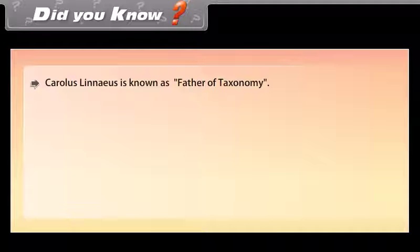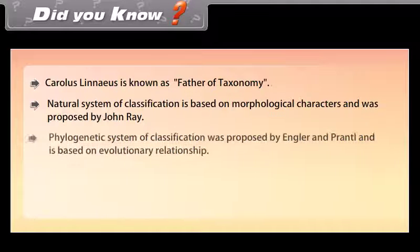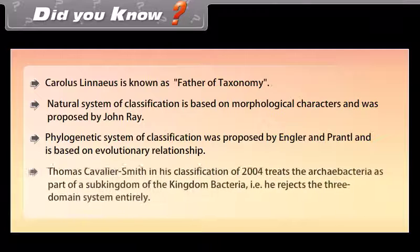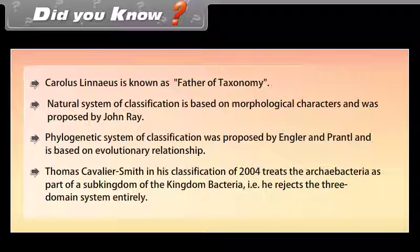Carolus Linnaeus is known as the father of taxonomy. The natural system of classification is based on morphological characters and was proposed by John Ray. The phylogenetic system of classification was proposed by Engler and Prantl and is based on evolutionary relationships. Thomas Cavalier-Smith, in his classification of 2004, treats the archaeobacteria as part of a sub-kingdom of the kingdom bacteria — that is, he rejects the three-domain system entirely.